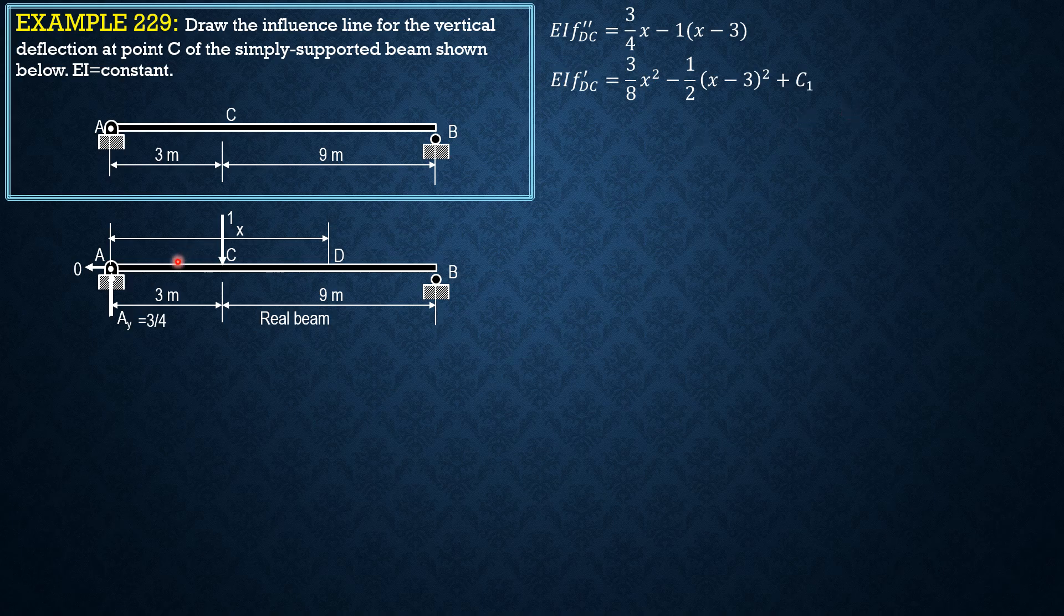By looking at the beam, since A the origin is a support, then there is no C sub 2. Therefore, integrating again, EIF DC equals 1 eighth of X cube minus 1 sixth of quantity X minus 3 cube plus C sub 1 X.